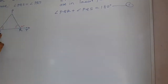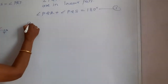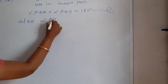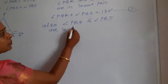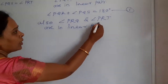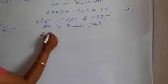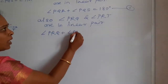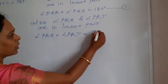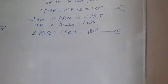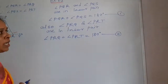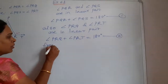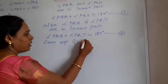Similarly, consider the relation between the other side angles PRQ and PRT. Angle PRQ and angle PRT are also in a linear pair, and therefore the sum of these two angles is also 180 degrees: PRQ plus PRT equals 180 degrees. This is equation number 2. From equations 1 and 2, one side is the same, so you can compare the remaining sides.